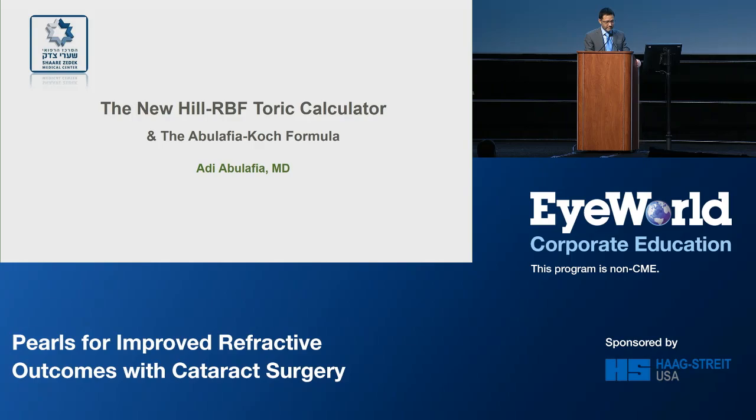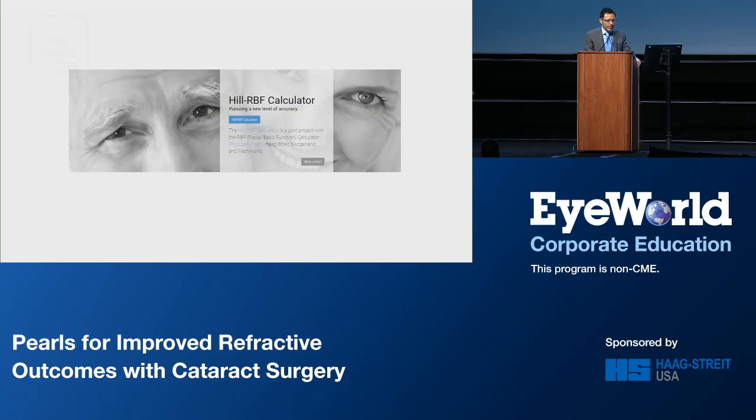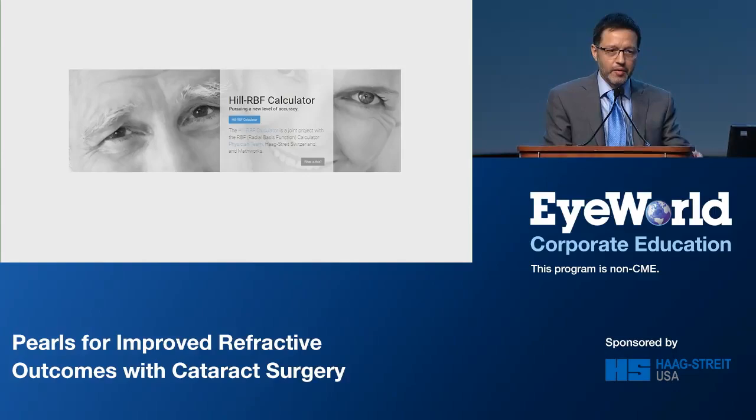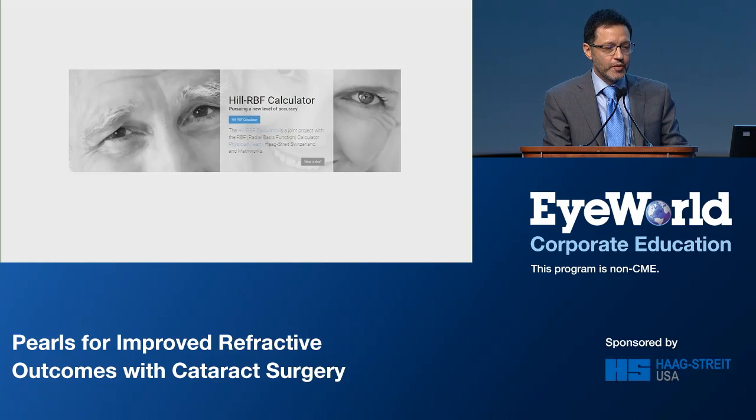Thank you so much, Warren. You are going to hear from Warren and Helga all about the Hill RBF Calculator and about its wonderful accuracy, but one has to remember that many of our cataract patients will suffer from corneal astigmatism as well, which should ideally be treated with Toric IOLs at the time of cataract surgery. So what is more obvious than to have a Hill RBF Toric Calculator?